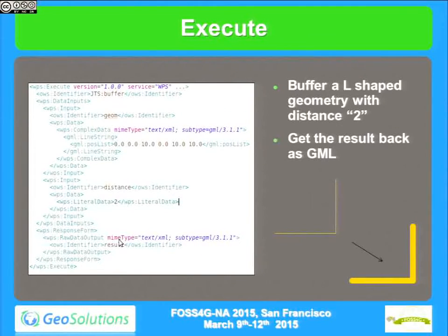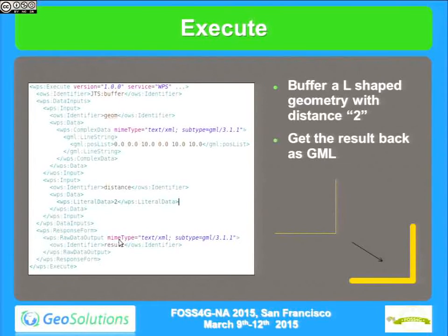Finally, we go to the Execute call, which is the request we issue when we want to actually run a process. We went through the discovery and description of the process, so we know how to call it and what it needs. We provide a geometry, a distance, specify that we want the output as GML 3.1, and the process will take this L-shaped geometry, apply a buffer of 2, and return a polygon. This is a very simple example — WPS processes can do pretty much whatever you want.